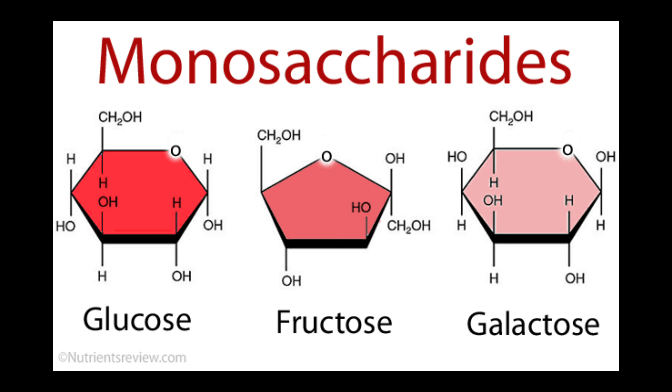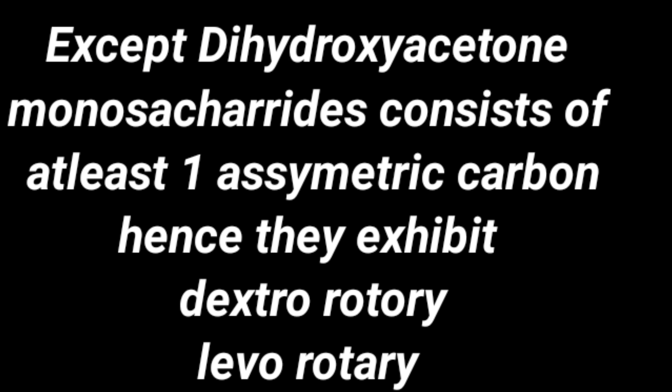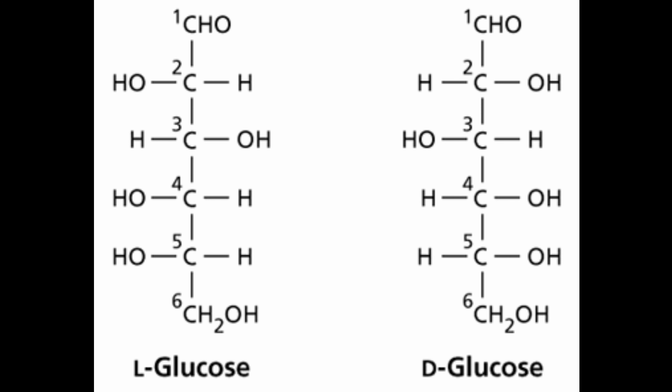Depending upon their ring structure, monosaccharides are also called pyranoses and furanoses. Except for dihydroxyacetone, monosaccharides consist of at least one asymmetric carbon, and hence they exhibit dextrorotatory and levorotatory nature. Here I am showing D-glucose and L-glucose — on the fifth carbon, the OH group is placed in different positions.